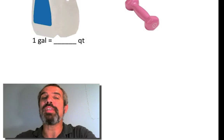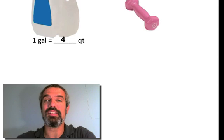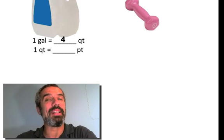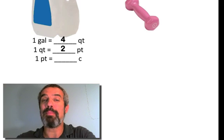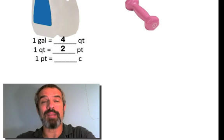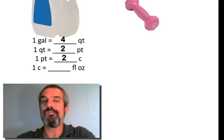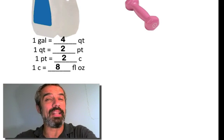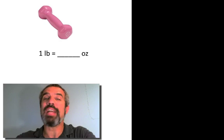Let's switch to volume. A gallon equals how many quarts? Was it four? 'Quart' means a quarter gallon, so four makes sense. A quart equals how many pints? Two. A pint equals how many cups? Two. Last one: a cup equals how many fluid ounces? Twelve? Sixteen? The correct answer is eight.